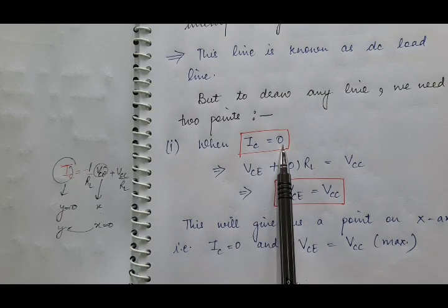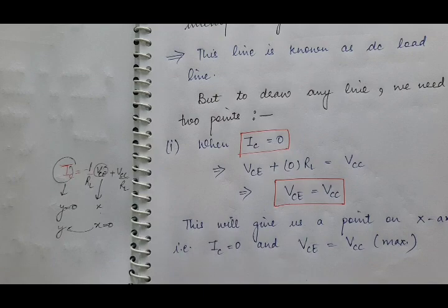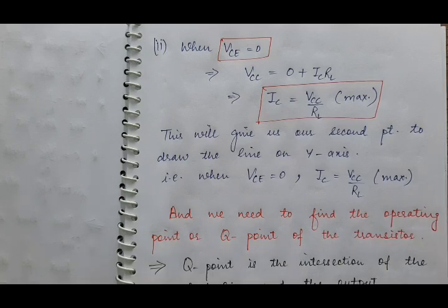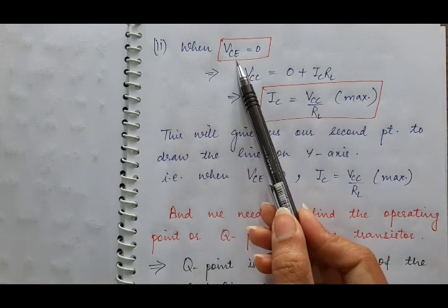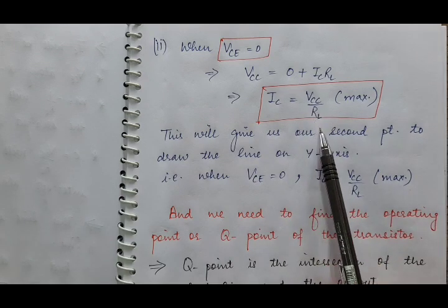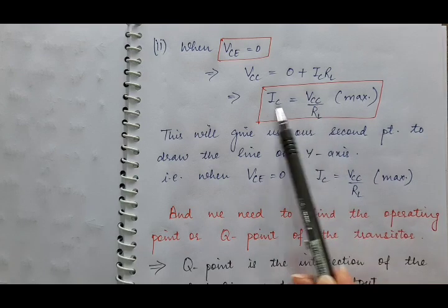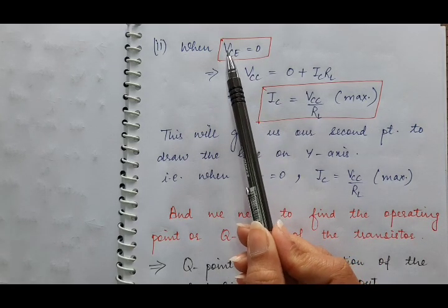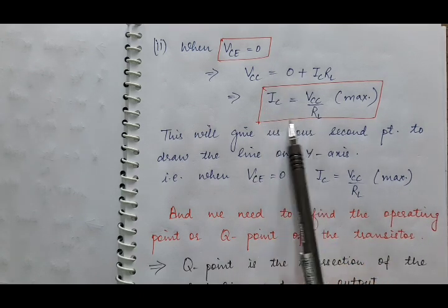If the Y-coordinate is 0, that means at this point it will lie on the X-axis. This gives us a point on the X-axis with VCE equal to VCC, which is the maximum output voltage. Similarly, for the second point, we make our X-coordinate — that is VCE — equal to 0, and find the value of IC, which is the Y-coordinate. So IC equals VCC/RL. VCC is the maximum voltage, meaning our current will be maximum when VCE equals 0. This gives the value on the Y-axis.